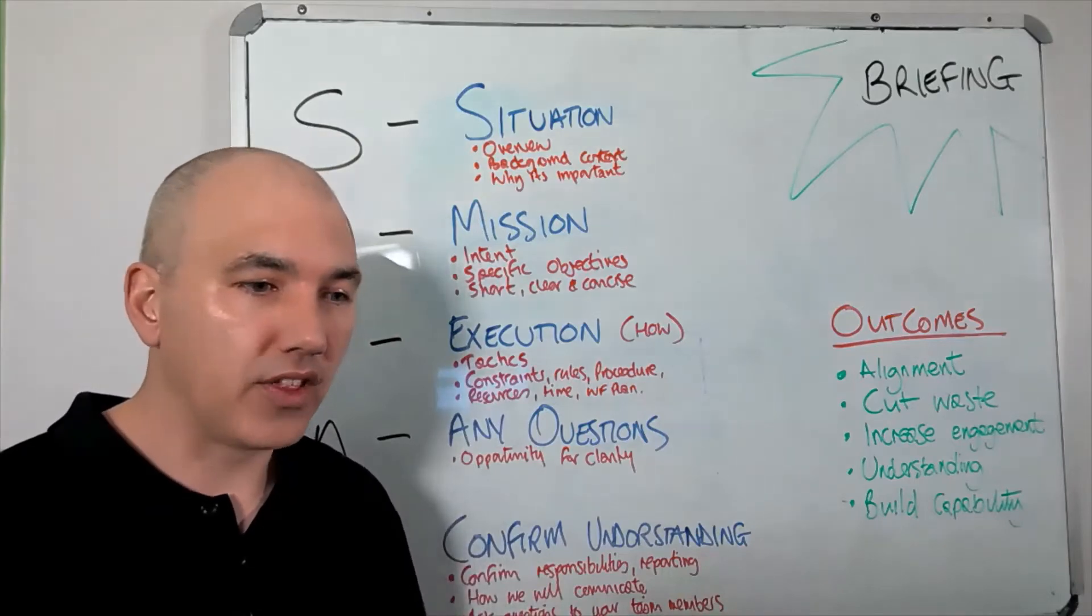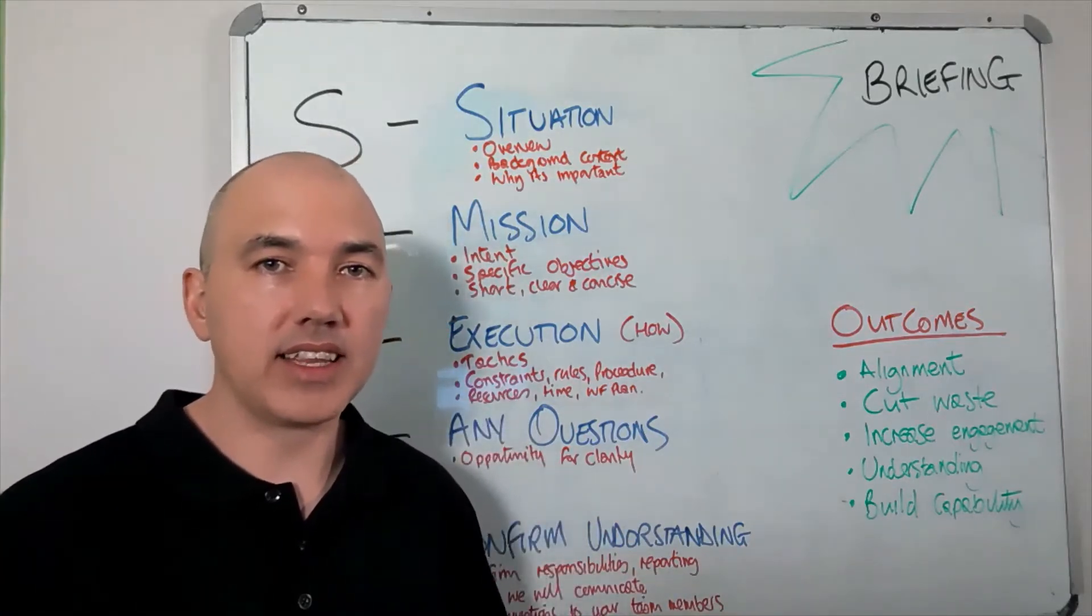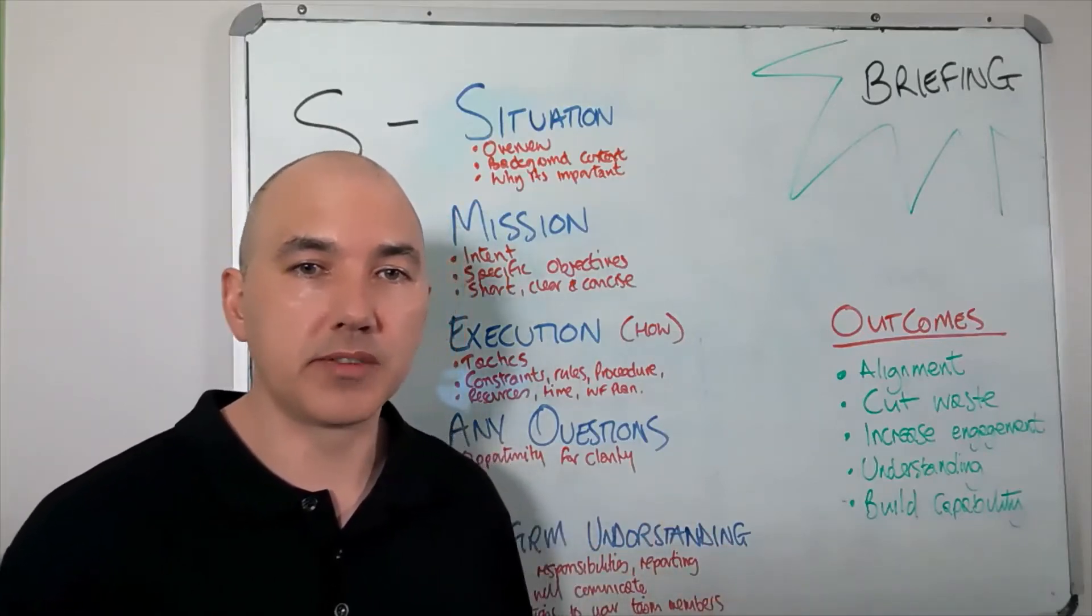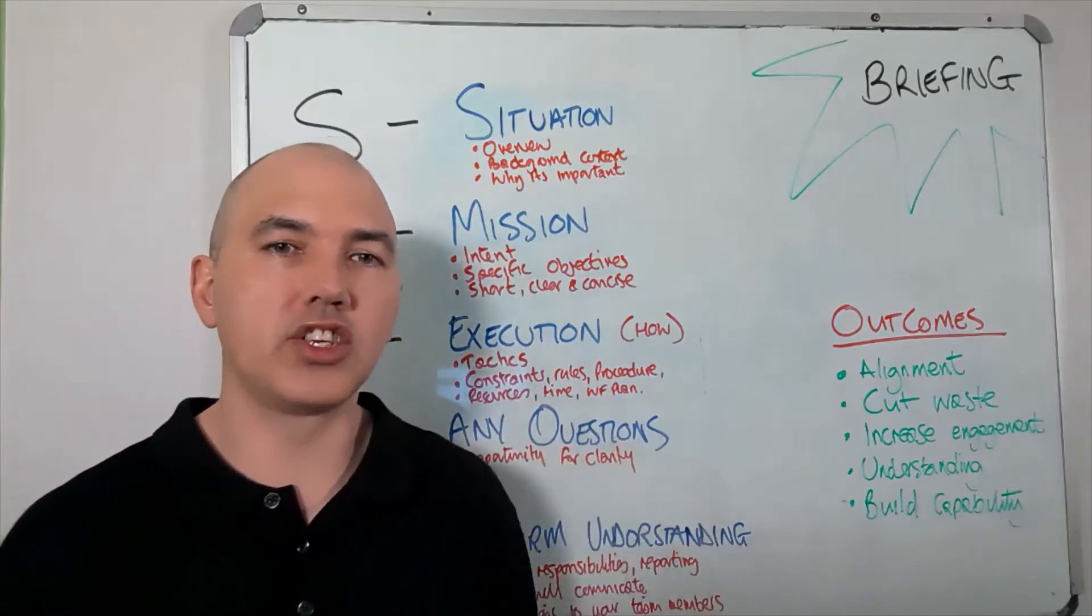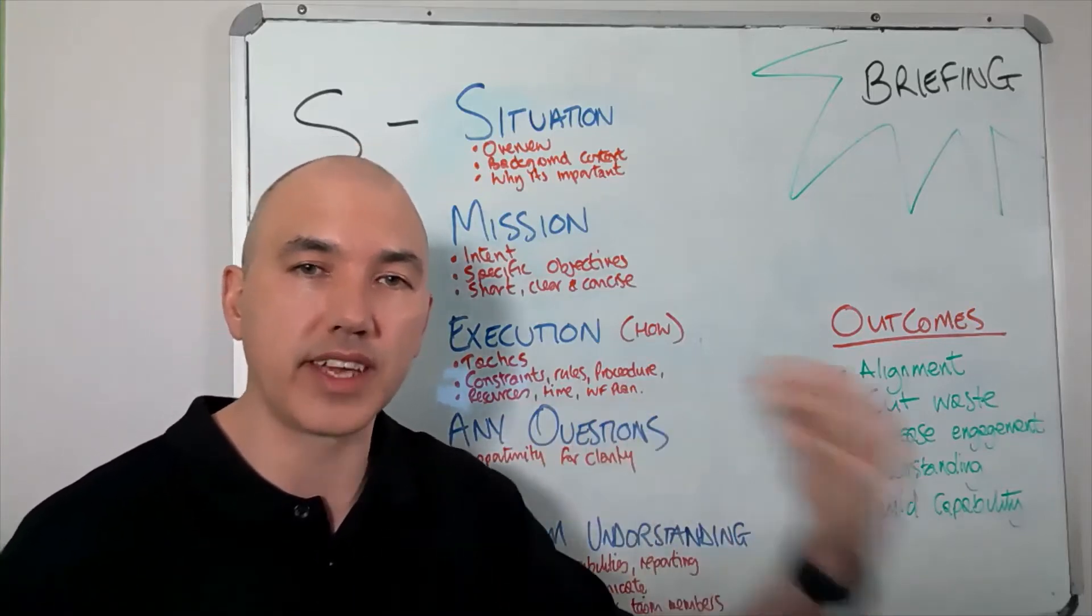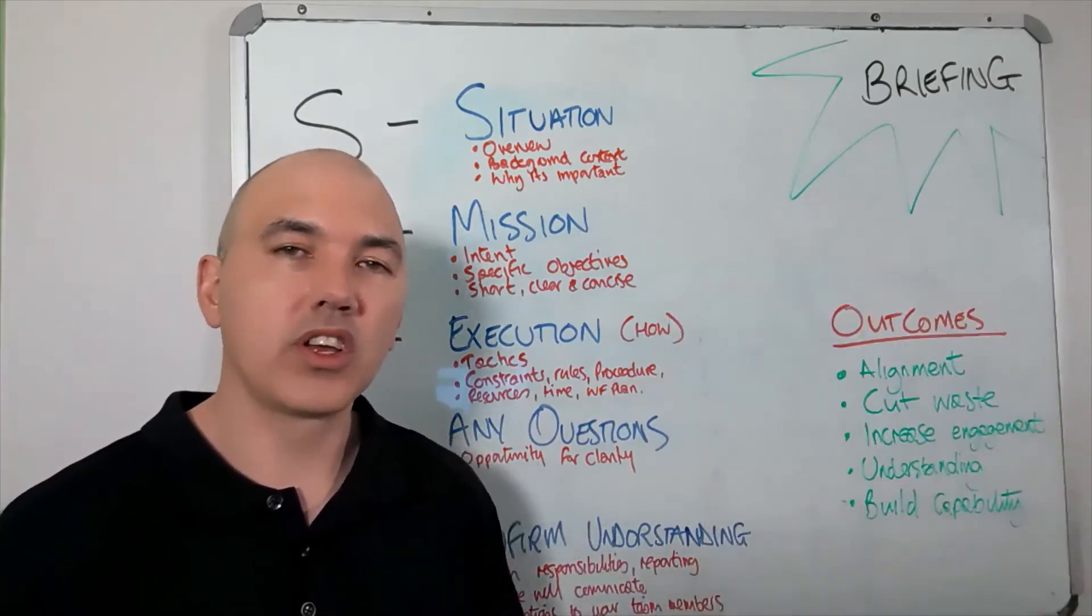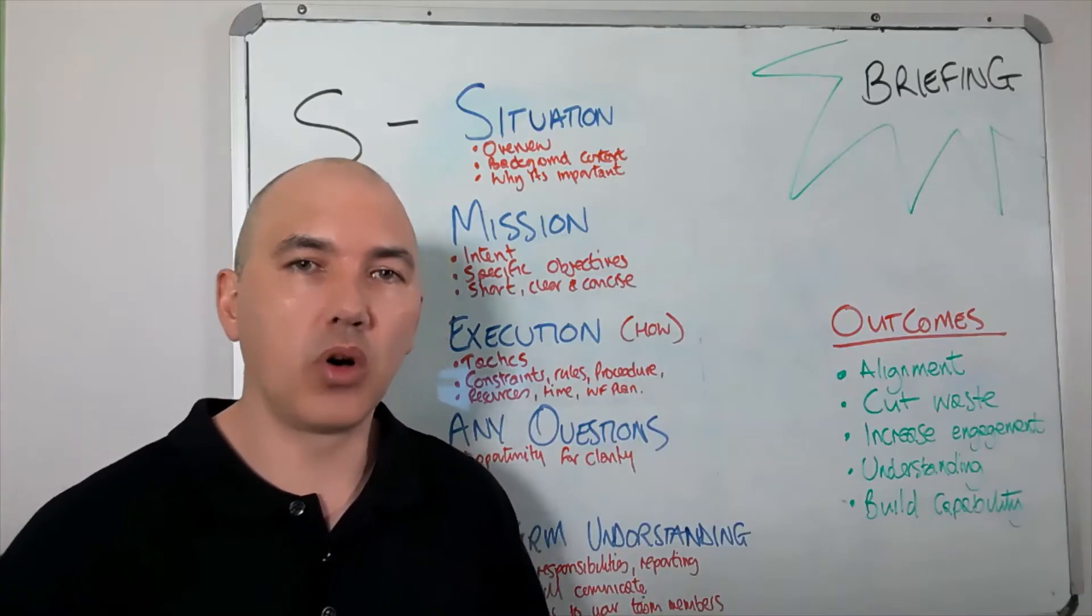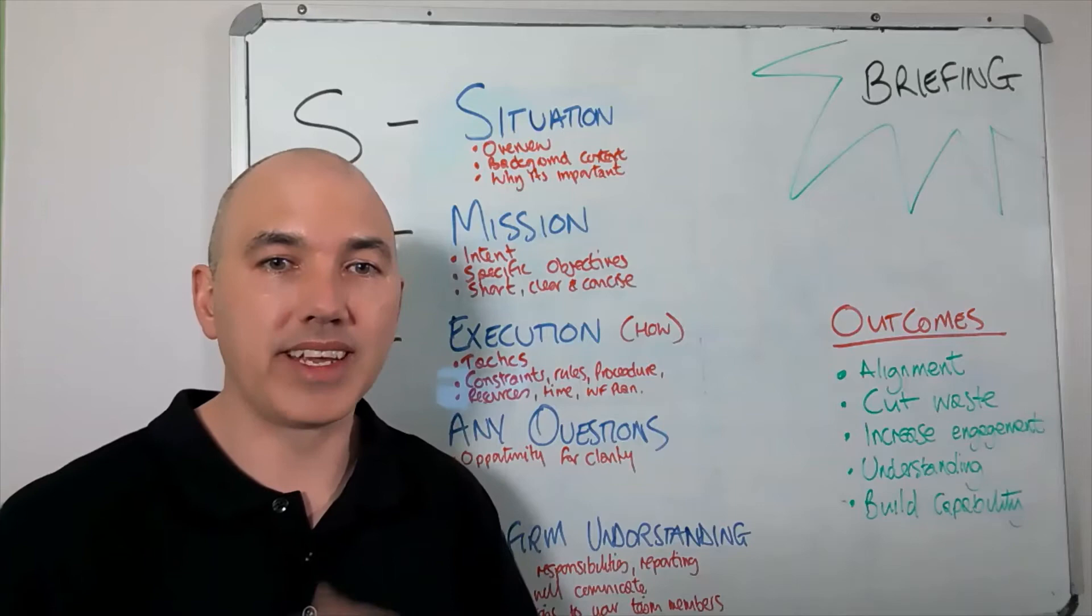And then it moves down to Execution. Now, this is the how part of the plan. And this is where the vast bulk of your time is going to be spent. So, what do we cover within the Execution? We look at what's the strategies, what are the tactics that we're going to use to get us to have a successful outcome. We're looking at any constraints, any rules, procedures, policies that our team members need to be aware of. We're going to give them those.